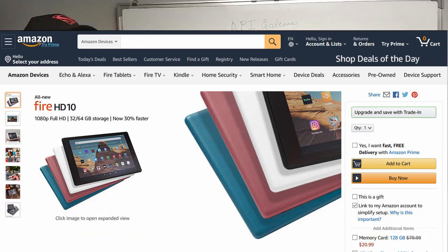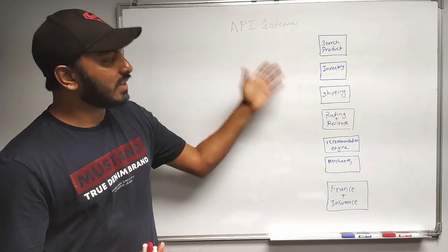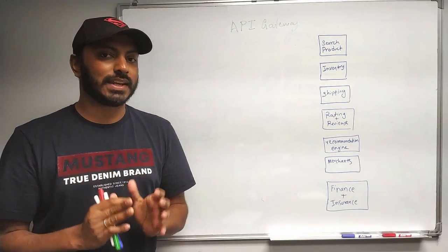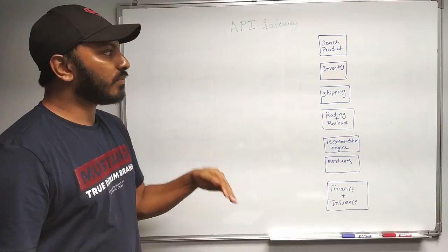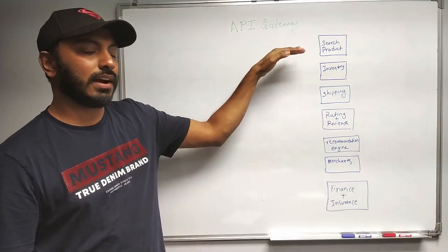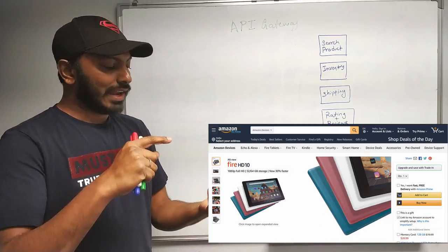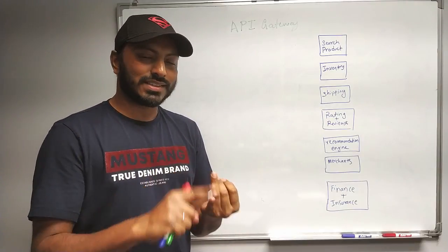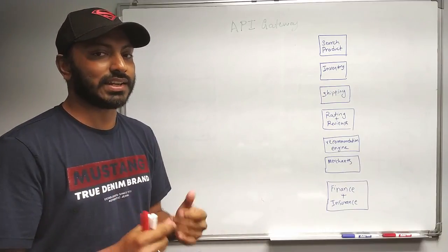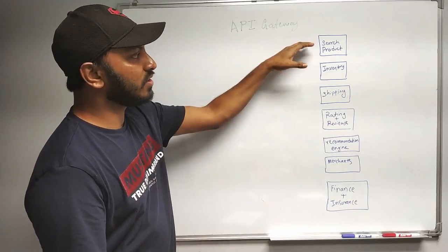If you look at this example page for an Amazon product listing, you will see a lot of information which is needed to render this specific page. I've listed out all the different microservices which we might need to access to get the information to render this particular product page. The first is a product-specific API or microservice where we need to get information like description, thumbnails, images, name, size, different varieties, and price. All of this information can be accessed from one microservice called the search and product microservice.